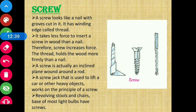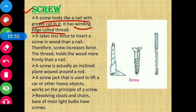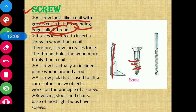The next simple machine is screw. A screw looks like a nail with grooves cut in it. It has a winding edge called thread. It is actually a nail-like structure which is made of grooves, and it has a winding edge called thread. If we wind up an inclined plane around a rod, that is essentially what we have in a screw.